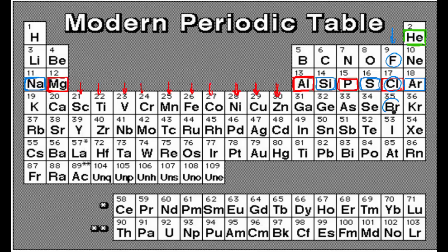Now why is this beneficial for us? Suppose you are putting fluorine, chlorine, bromine and iodine in the same group — that is group number 17 in the modern periodic table. If we know the properties of fluorine, we can fairly guess the properties of chlorine, bromine or iodine. That is the beauty of the periodic table — your effort will be minimized.